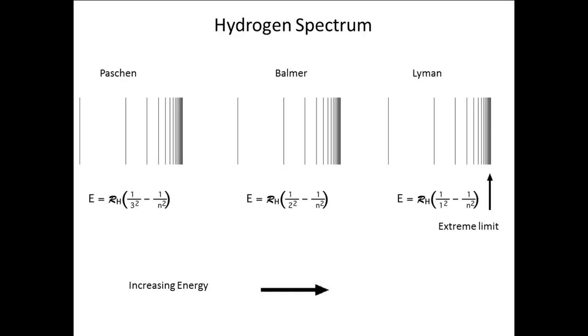We can combine these formulas into a single one with two variables, N1 and N2, which are both whole numbers, with N2 greater than N1.